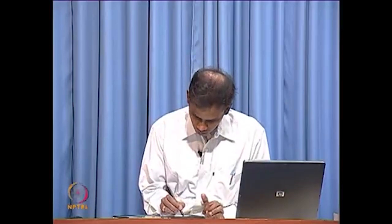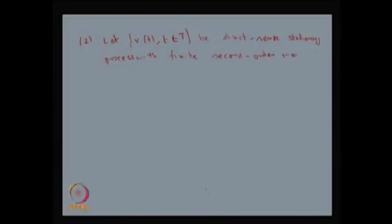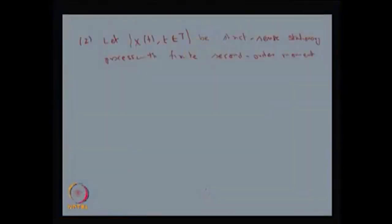Let me start with the example in which the given x(t) is a strict sense stationary process with finite second order moment. Note that you do not strictly need the finite second order moment for a strict sense stationary process, but in this example I have taken x(t) as a strict sense stationary process along with the finite second order moment.